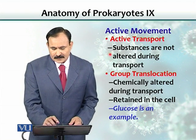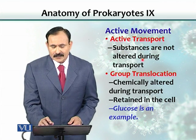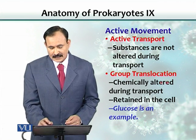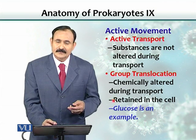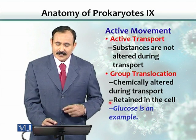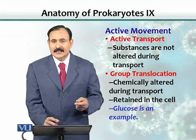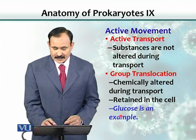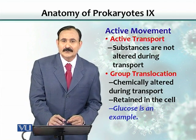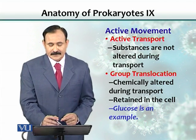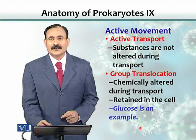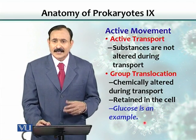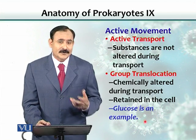During active transport, substances are usually not altered during transport. But in group translocation, the substances moving from outside into the cell using energy are retained in the cell by a slight modification. Glucose is an example — as the cell acquires glucose from the medium, a phosphate group is added to it, making it a larger, modified molecule that remains within the cell and does not exit.